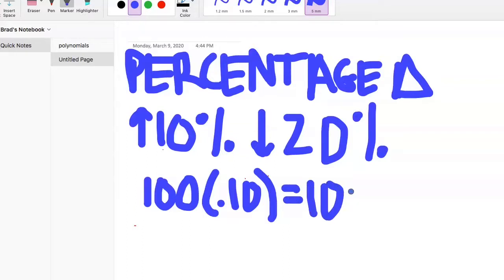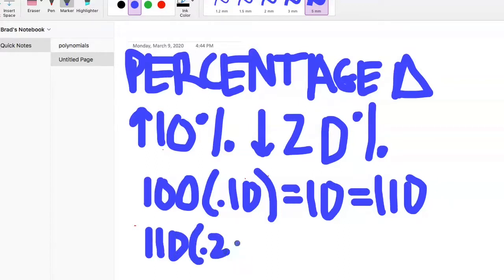That equals 10, and then our new number, because we had 100, we just made $10. Now we have 110. And this is going to be why the answer is not going to be down 10%, because now at the start of the next month, we already have 110. And then it's going to drop from 110, it's going to drop by 20%.